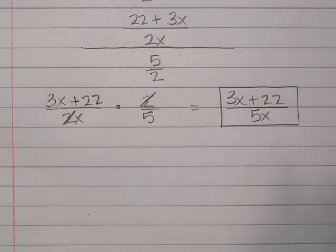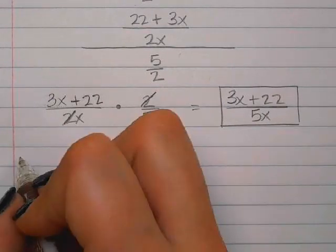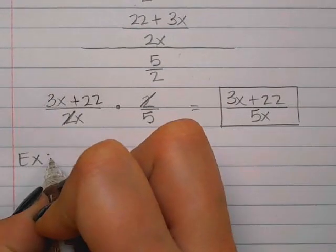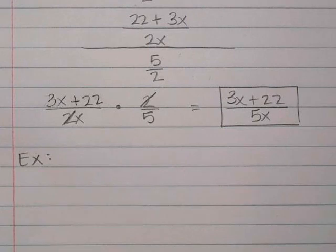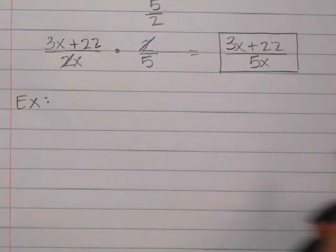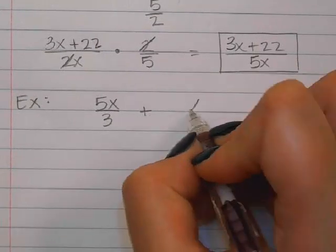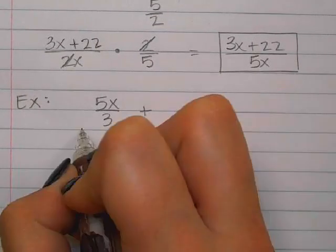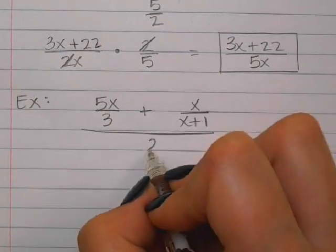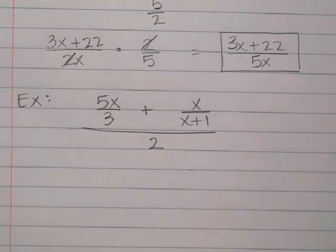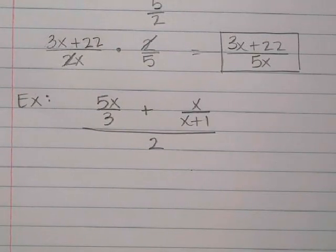It's exactly what you've done before — it's just like having two sets of steps to do instead of just one. Next we're going to look at 5x over 3 plus x over (x plus 1), divided by 2. It won't always be like this. The two fractions could be subtracted, and they could be on the bottom instead of the top.